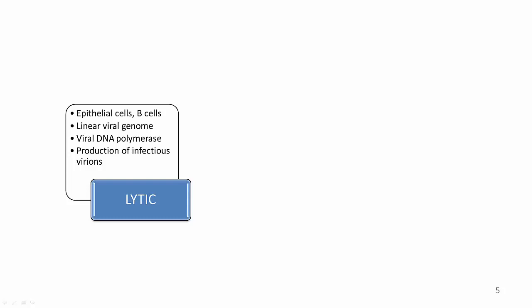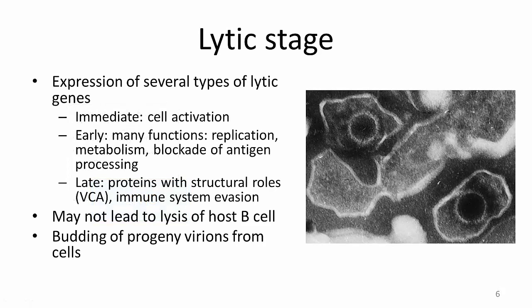During lytic replication, viral DNA polymerase is responsible for copying the viral genome. The lytic stage ultimately results in the production of infectious virions. Gene products are produced in three consecutive stages. Immediate lytic gene products act as transactivators, enhancing the expression of later lytic genes. Early lytic gene products serve many different functions, including replication, enhancement of metabolism, and blockade of antigen processing. Lastly, late lytic gene products include proteins with structural roles, such as the viral capsid antigen, which helps to form the viral capsid, and others that help EBV evade the immune system.